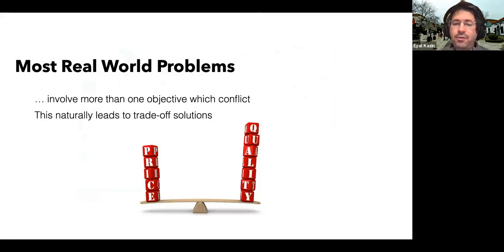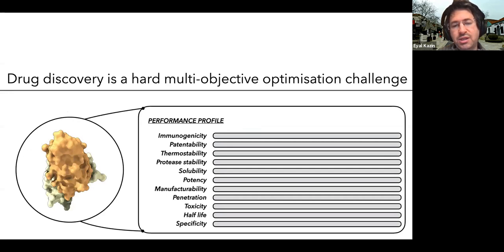For example, even when we do shopping, we constantly compare price versus quality. It's hard to both minimize the price while maximizing quality. And this is relevant for many industries — for example, supply chain management, manufacturing, land use planning, and also, of course, in the very timely drug discovery.